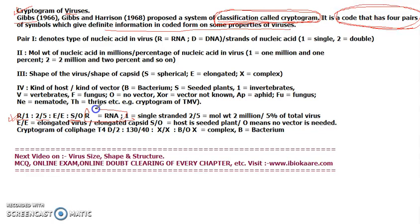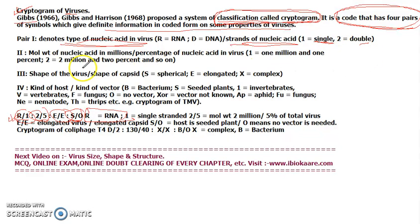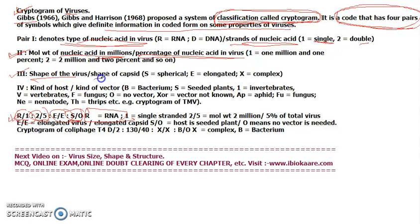This has four groups. Group one, pair one: R stands for the nature of nucleic acid, and 1 stands for the strand — single strand if one, double strand if two. The second part denotes the molecular weight of nucleic acid in millions, that is 2, and 5 is the total percentage of nucleic acid present in the virus — five percent for TMV. The third group denotes the shape of the virus: E stands for elongated.